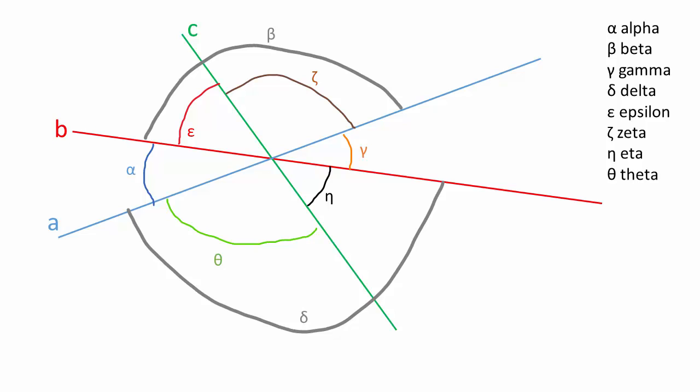Let's call epsilon and zeta together beta, and call eta and theta together delta, and just not pay line C any attention. Can we do that?